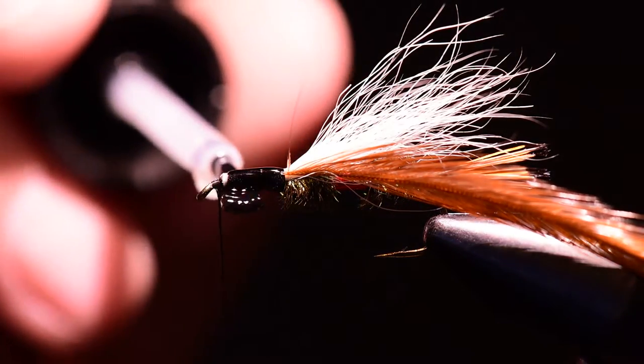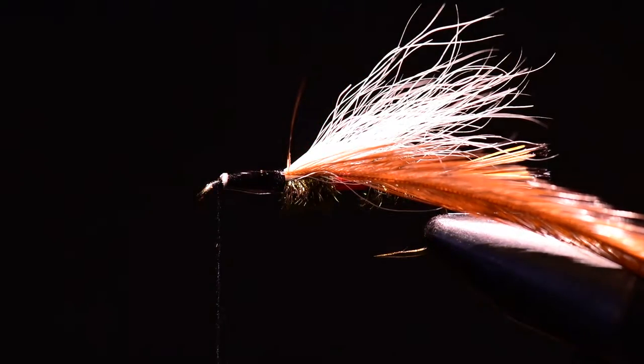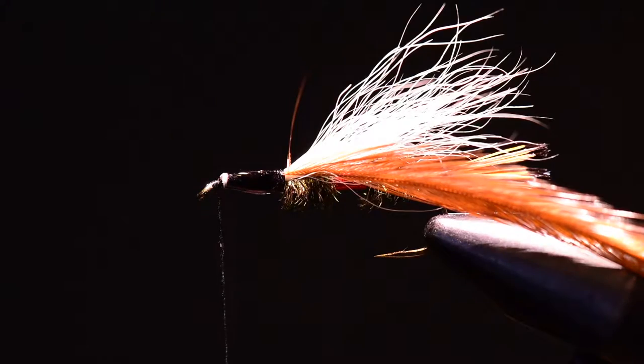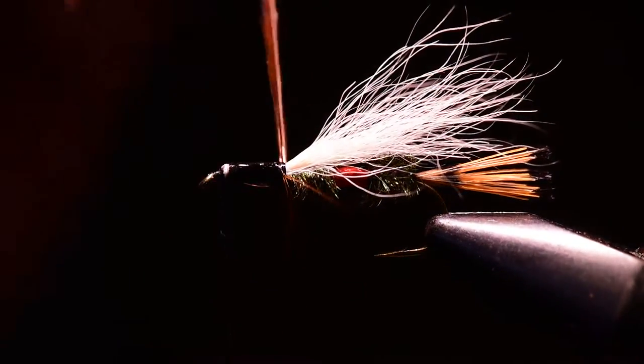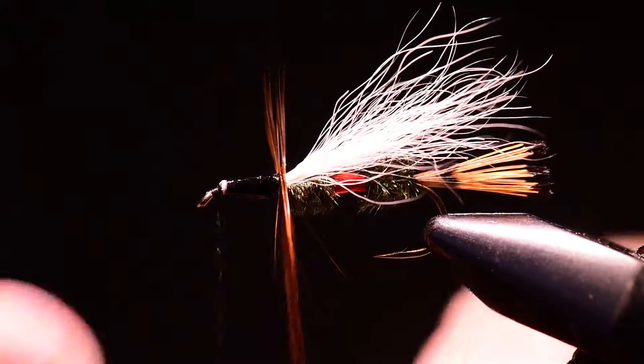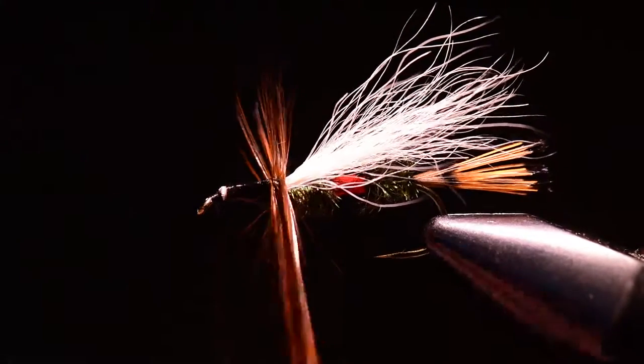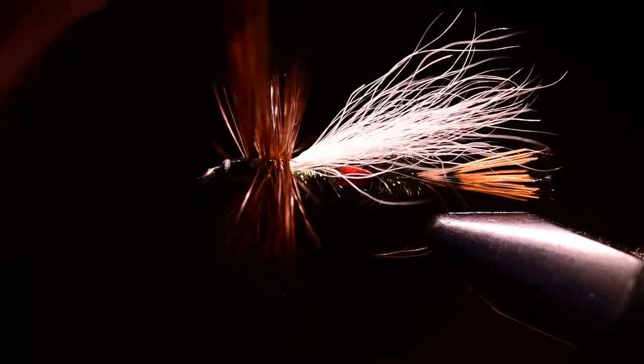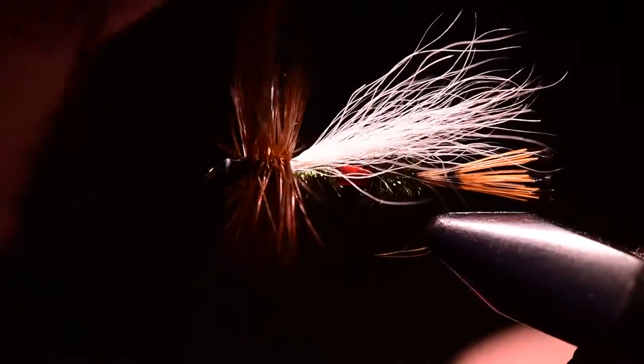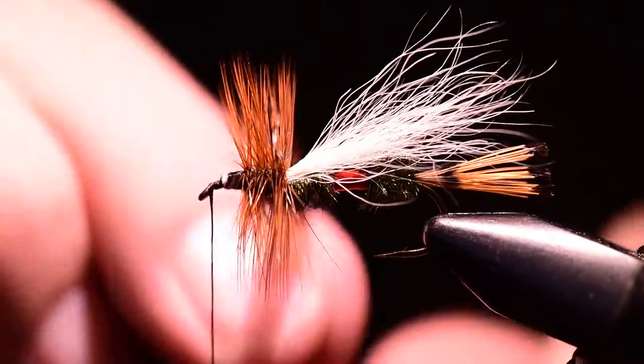I'm going to glue this flat area so I'm tying the hackle into a bed of glue and wind those forward in consecutive wraps right at 90 degrees to the hook shank. One wrap in front of the next in front of the next in front of the next as we tie this all the way up to the head position.